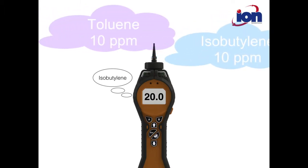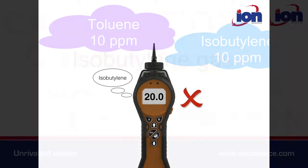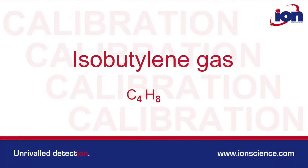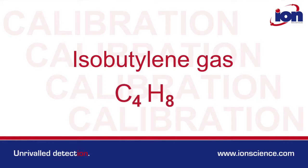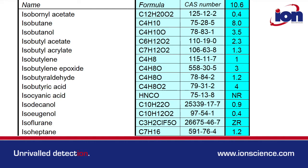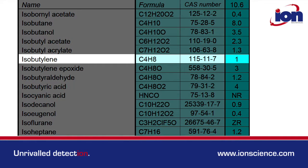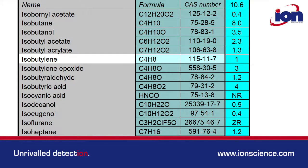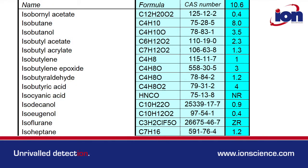Isobutylene gas is commonly used to calibrate PID instruments, as it's relatively harmless at lower concentrations and offers a robust response. Many Ion Science PID instruments are calibrated using isobutylene, which is allocated a response factor of one. Other VOC gases are allocated response factors relative to that of isobutylene.